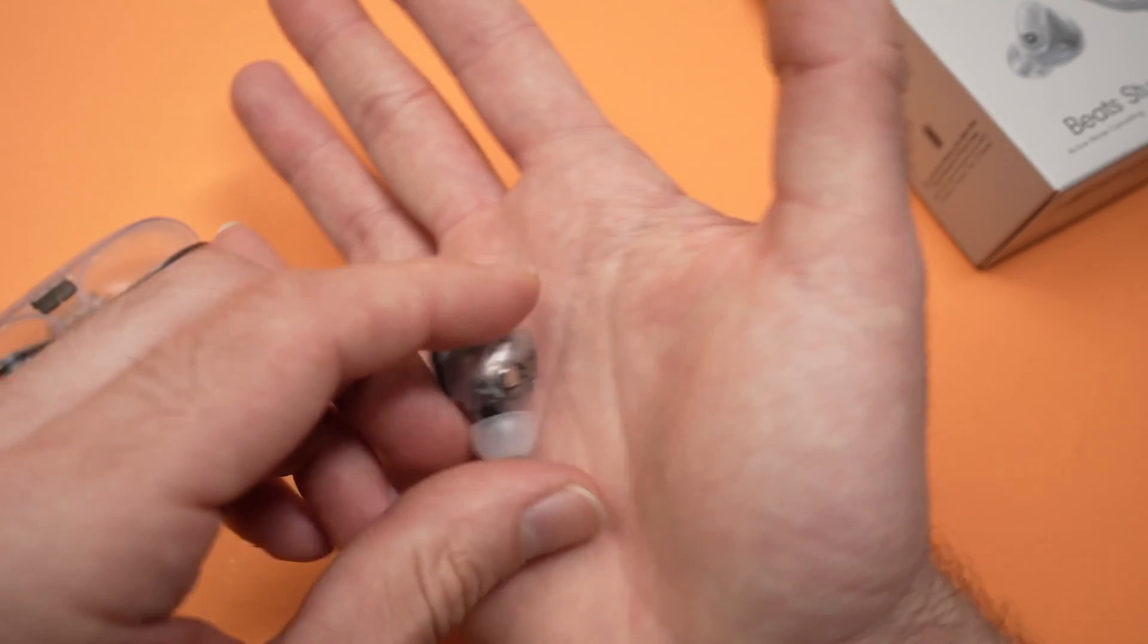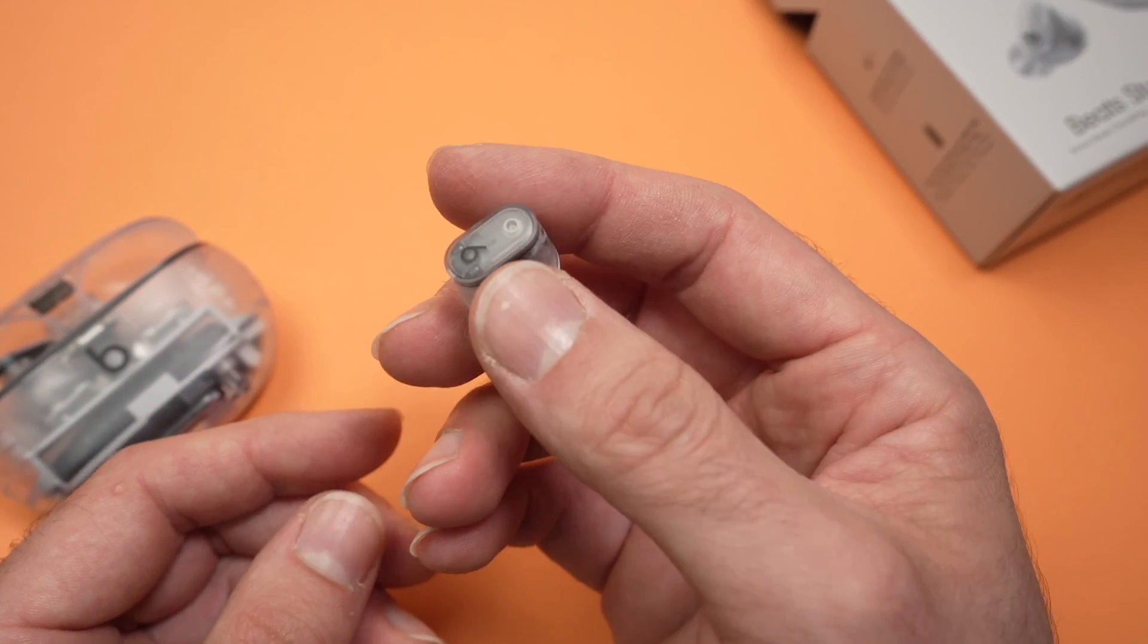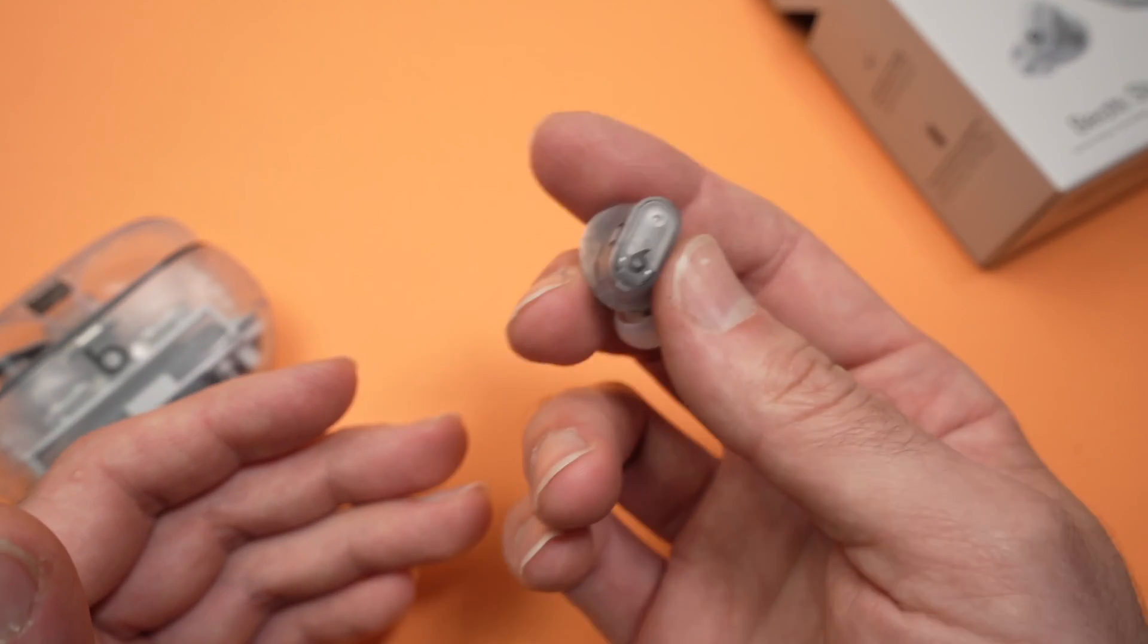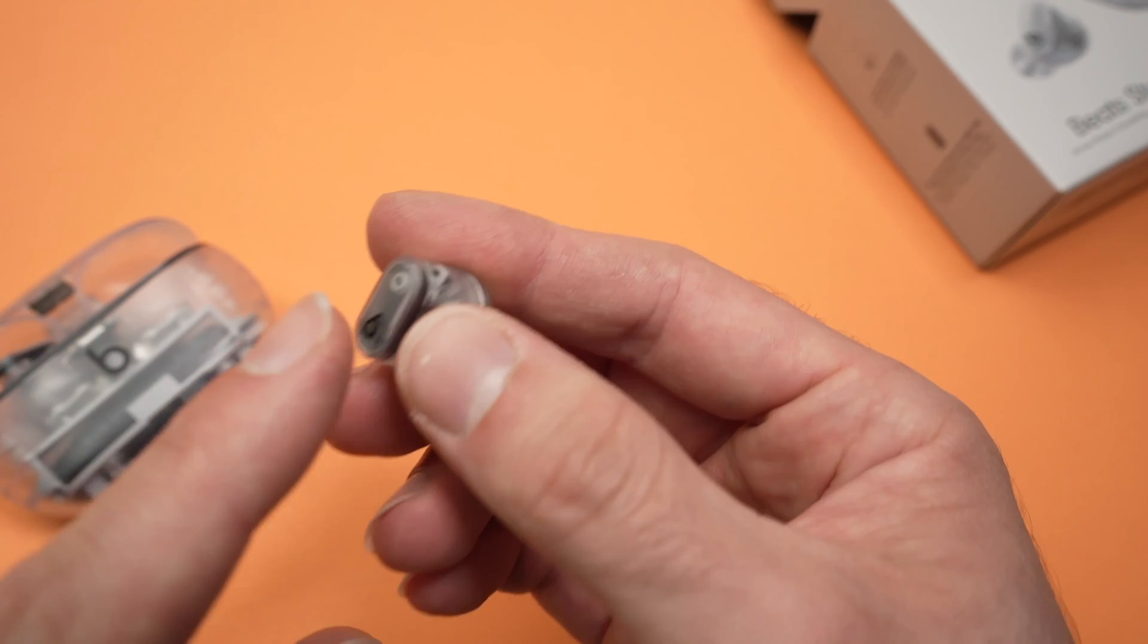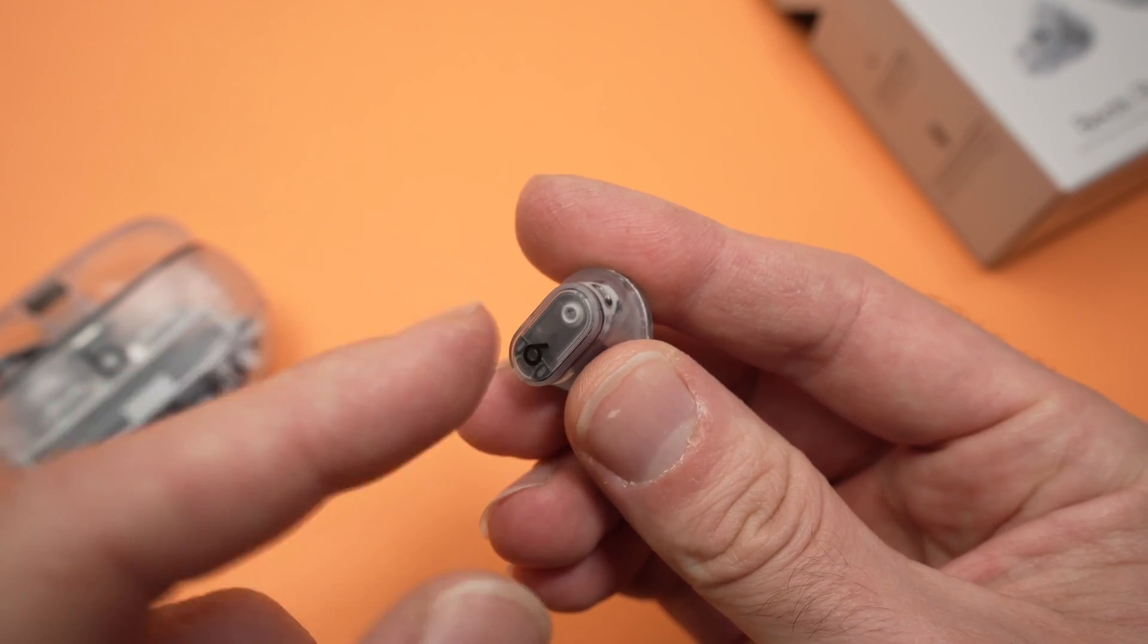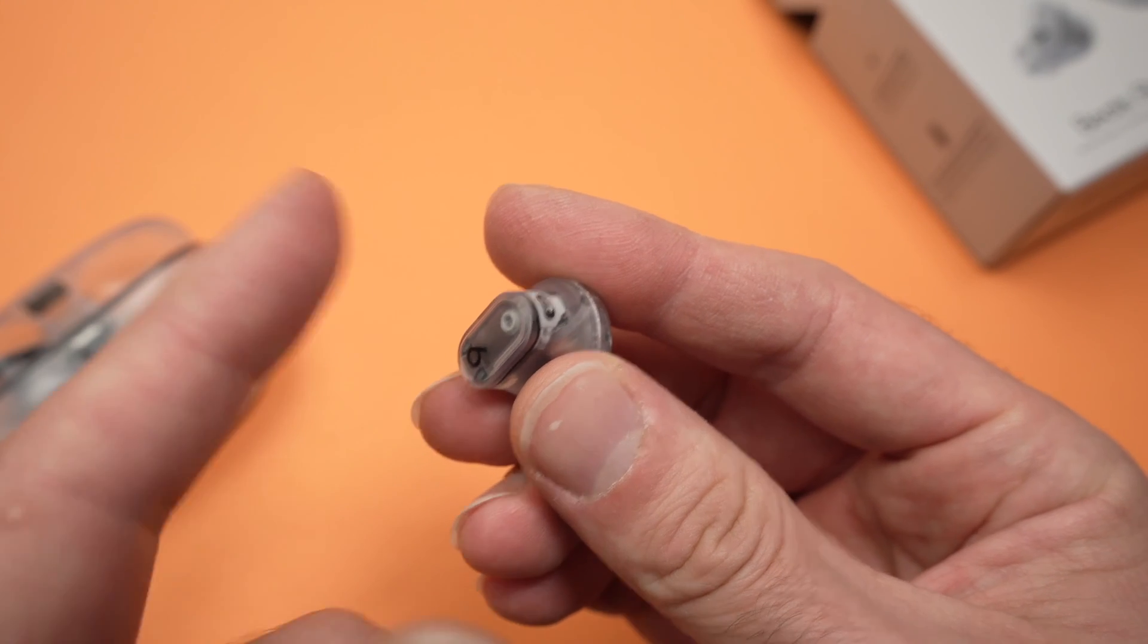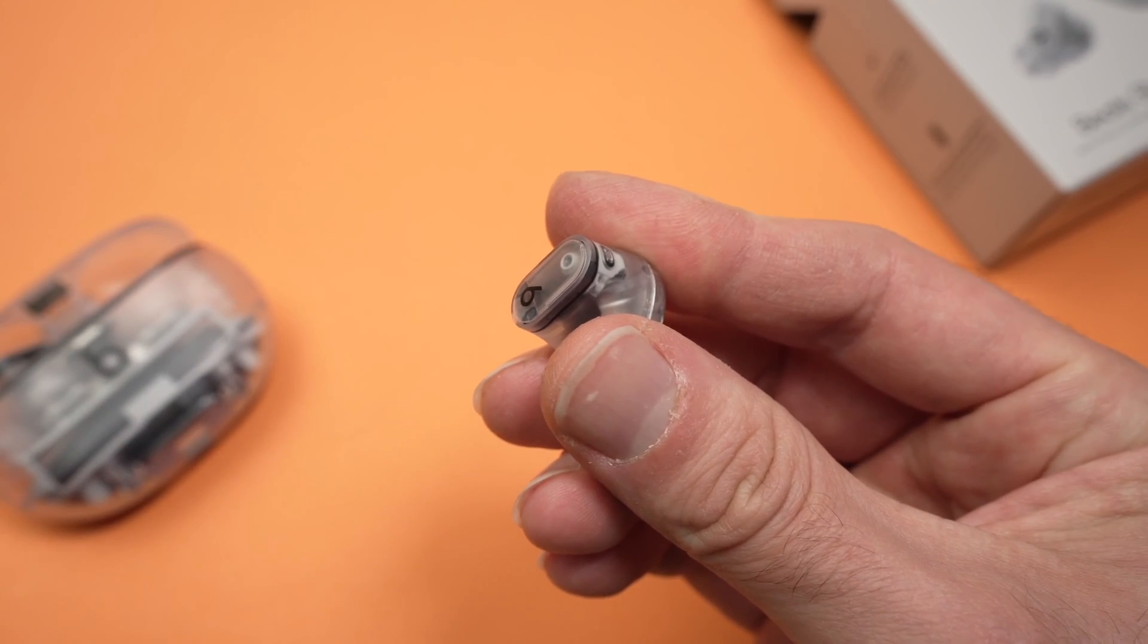Now how to control your music using these Beats Studio Buds? Well, very easy. First of all, to play or to pause any audio that is on your phone, computer or whatever, you just have to press once this beat logo like this and you're going to feel a small click. This is the button clicking and the song will play. To pause, press on it again.